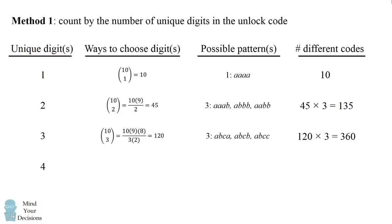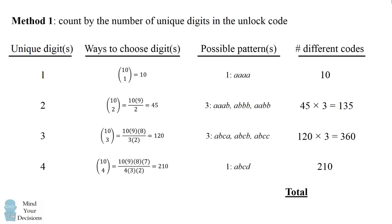Finally, we could have four unique digits. There will be 10 choose 4, which equals 210 ways to choose the digits. Once we choose them, there is only one possible pattern because we have to use each digit exactly once. So there will be 210 possible different codes with four unique digits. Adding up all possibilities gives us a total of 715.